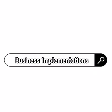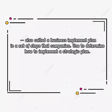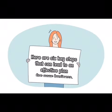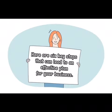Business Implementations, also called a business implementation plan, is a set of steps that companies use to determine how to implement a strategic plan within the company activities to achieve one or more business plan objectives. Here are six key steps that can lead to an effective plan for your business.